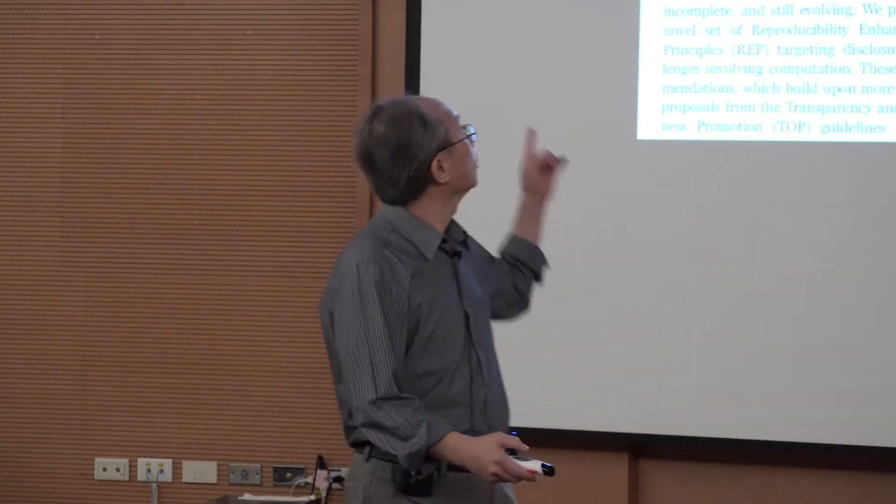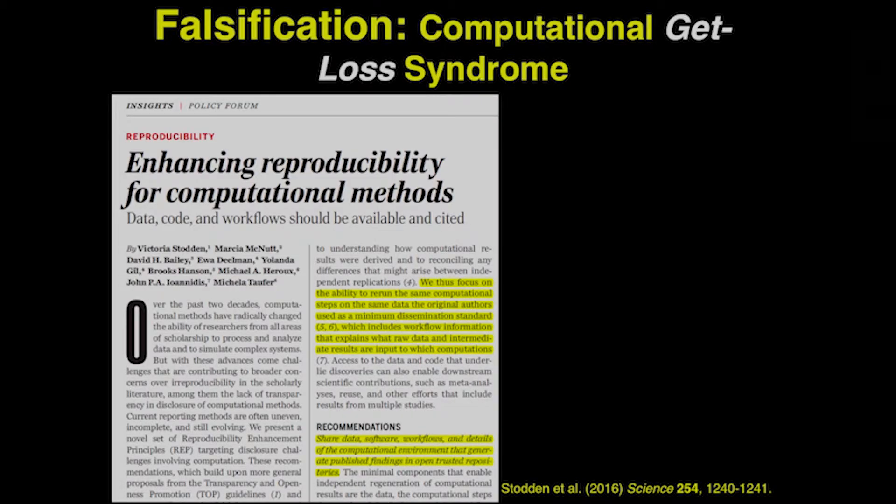Some computational scientists have admitted to me that sometimes they downloaded code and could not run it on their own computer. How can you trust the data is correct? And when you have a dataset consisting of tens of thousands of data points, how do they handle the data, eliminate outliers, make it look better — none of that was described. This became a major issue, and in 2016 in Science magazine...